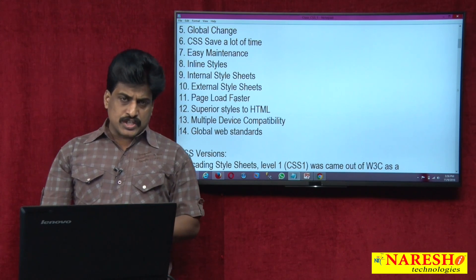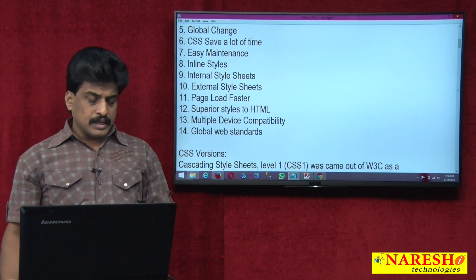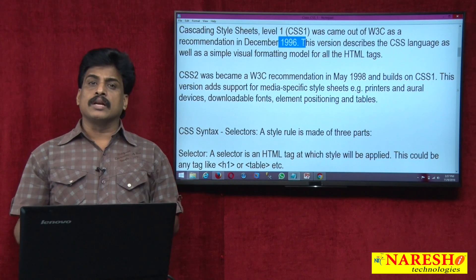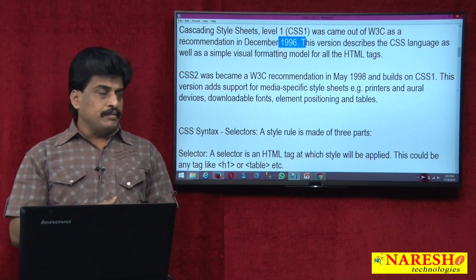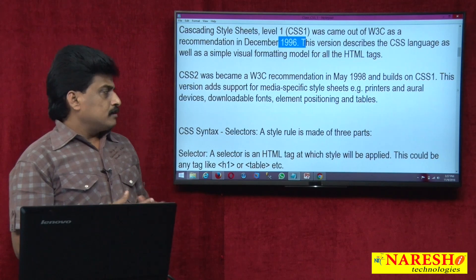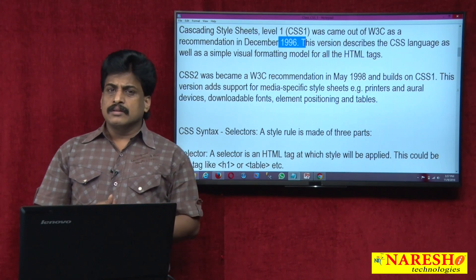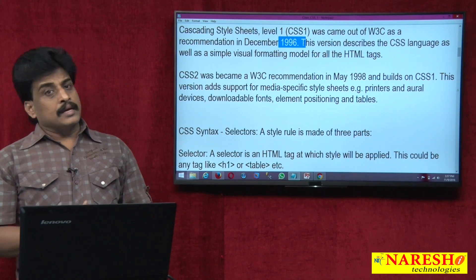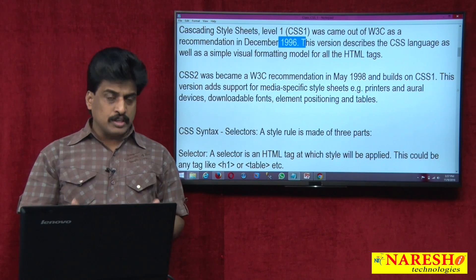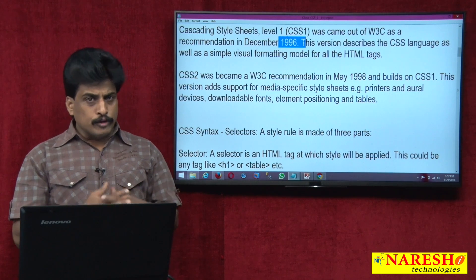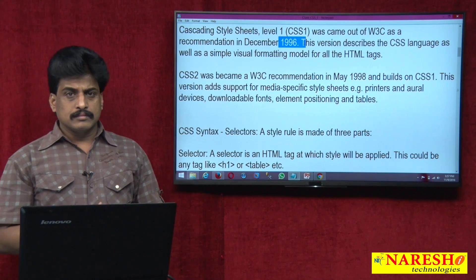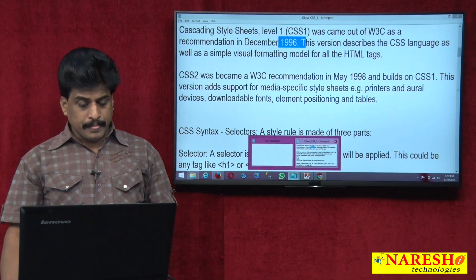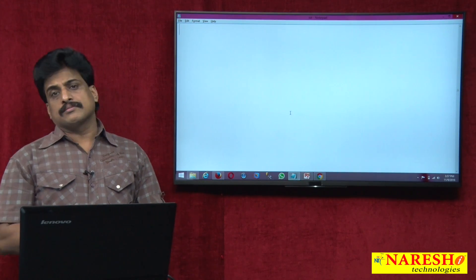Regarding CSS versions, there are a number of versions available. First, CSS 1.0 was released in 1996. In 1997, 2.0 was released. In approximately 1998-1999, CSS 3.0 was released. And recently CSS 4.0 was released. Before understanding these versions, let us understand how the syntax effectively works and what the preconditions are.